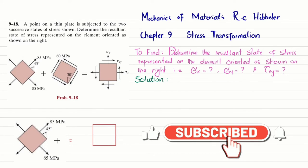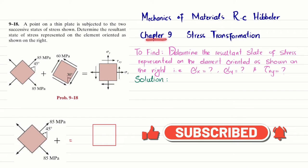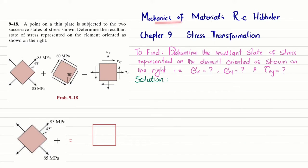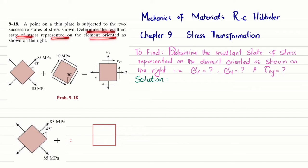Welcome back. In this video we are going to solve problem 9-18, taken from chapter number 9, Stress Transformation, from the book Mechanics of Materials by R.C. Hibbeler. The statement is: a point on a thin plane plate is subjected to two successive states of stress as shown. Determine the resultant state of stress represented on the element oriented as shown on the right side.